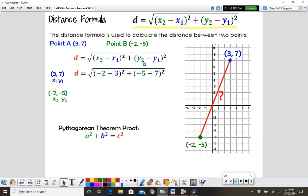Then we're going to square that value and add it to y2 minus y1 squared. So y2 is negative 5 minus 7 squared.